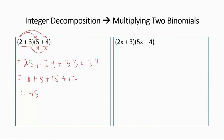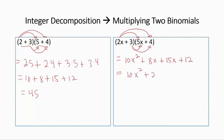Following the same steps for (2x plus 3)(5x plus 4): the first terms give 10x squared; the first by the second gives 8x; the second by the first gives 15x; and the last terms give 12. So this equals 10x squared plus 23x plus 12. The multiplication of two binomials is just a property of numbers — we decompose and multiply, which is very natural.